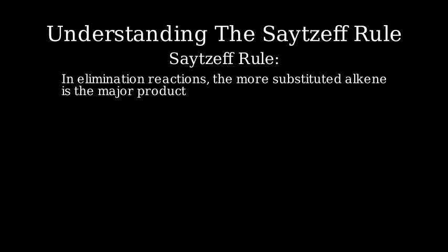Let's start with a simple statement of the Zaitsev rule. In an elimination reaction, the more substituted alkene—that is, the alkene with more alkyl groups attached to the carbon-carbon double bond—is formed preferentially as the major product.